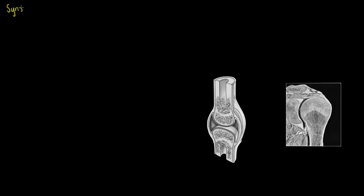Welcome to this tutorial where we are going to be talking about joints, and specifically synovial joints. We have three different types of joints within the body, each with their own subdivisions. They allow us to move, run, climb, jump, skip, hop, and even search through YouTube to find this video.